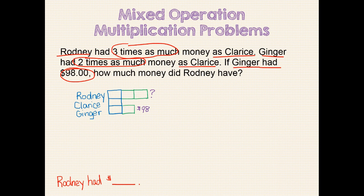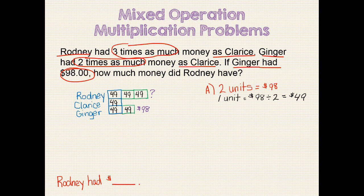Now we are ready to let our model drive the math. We know that Ginger has $98, so two units equals $98. Therefore, one unit equals $98 divided by 2, which is $49. Let's go ahead and write that in for each of our units. We have to find out how much Rodney had, and he has three units, which equals $49 times 3, which equals $147. Rodney had $147.